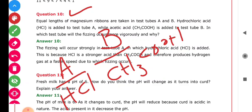In which test tube will the fizzing occur more vigorously and why? The simple question asks which tube will have a reaction that takes place very intensely. Vigorously means an intense reaction will take place.